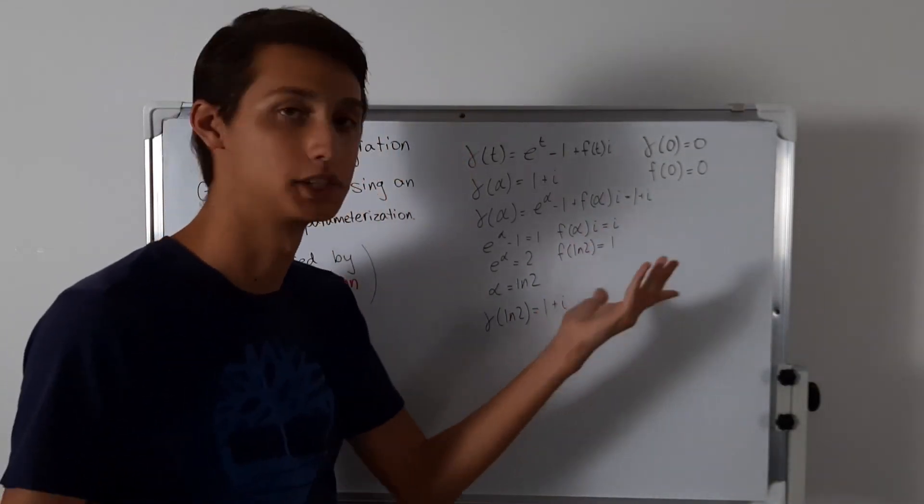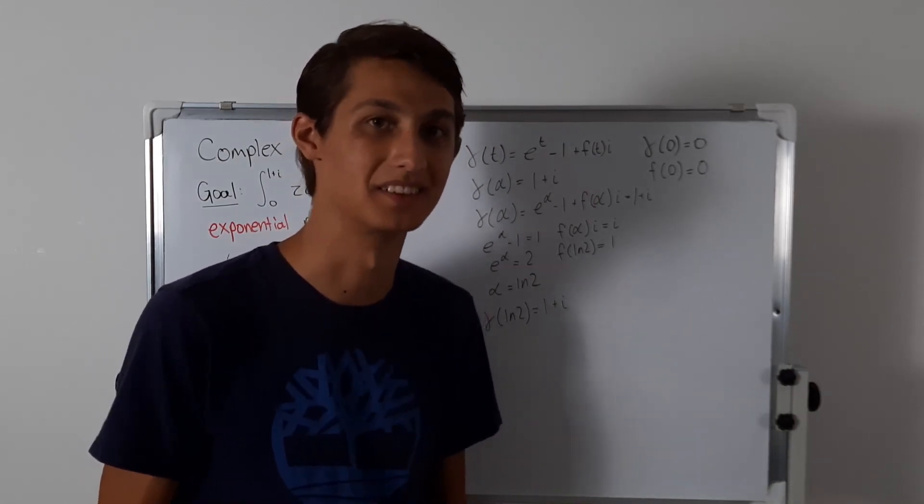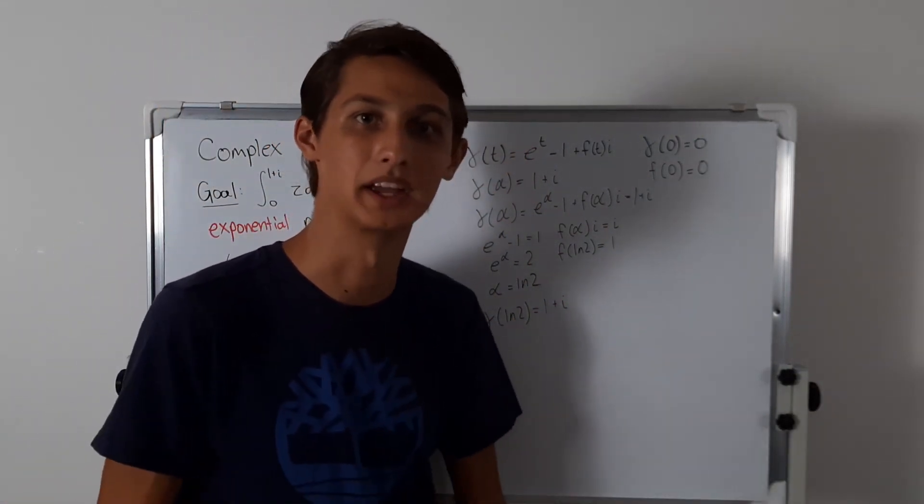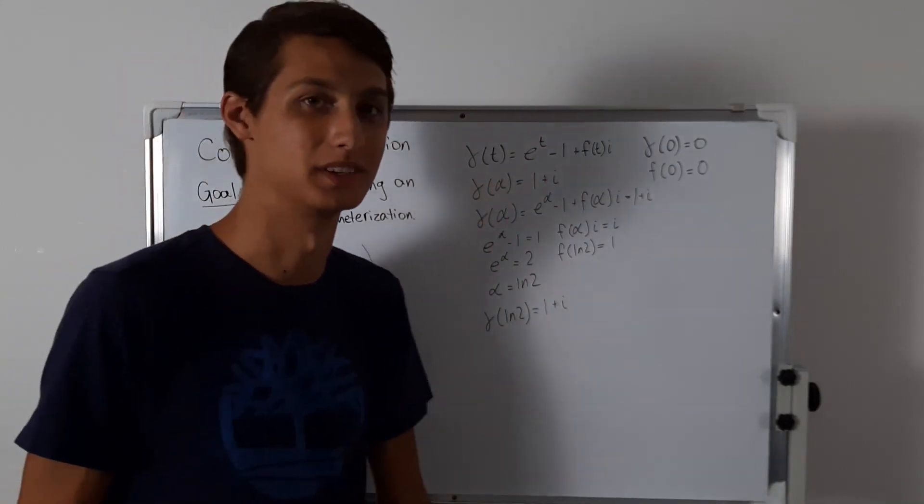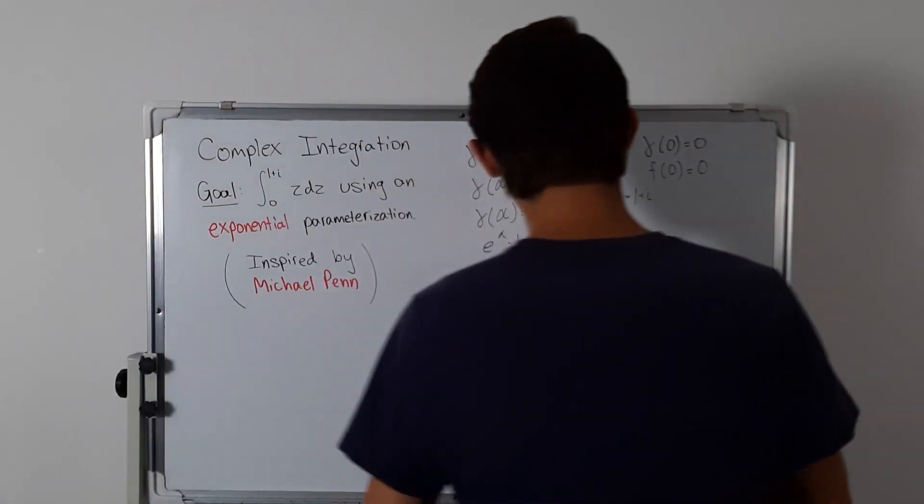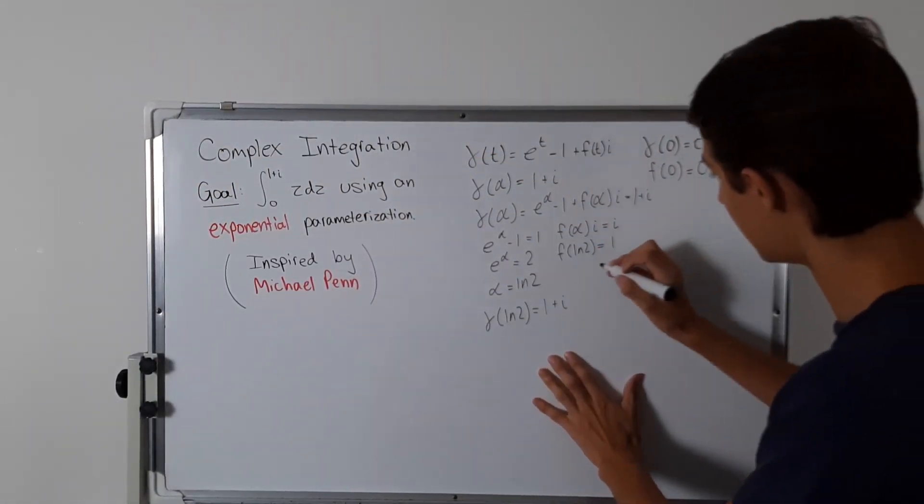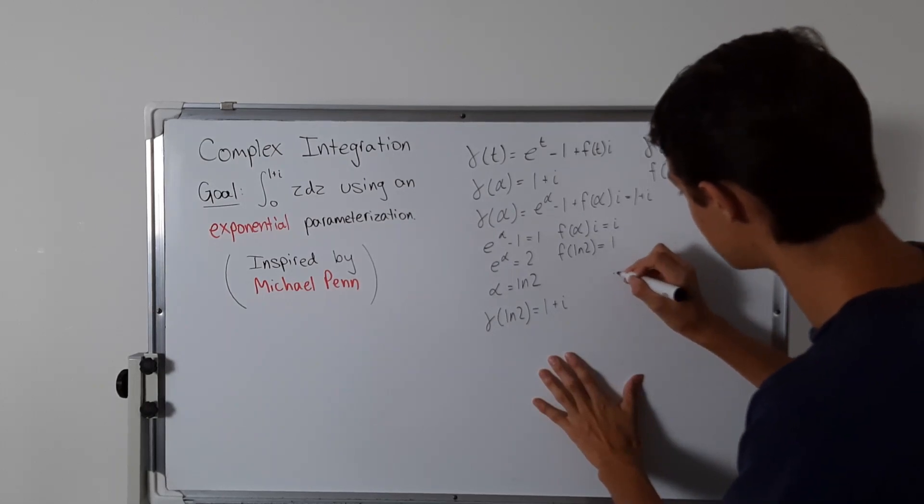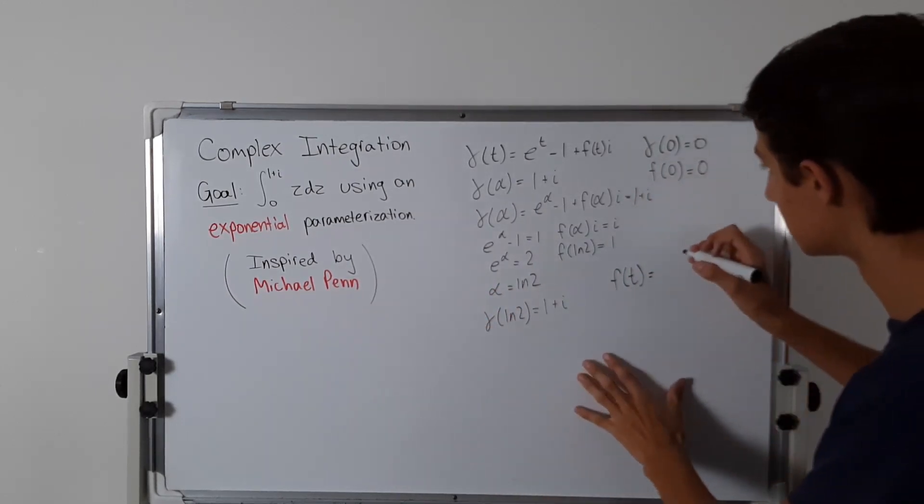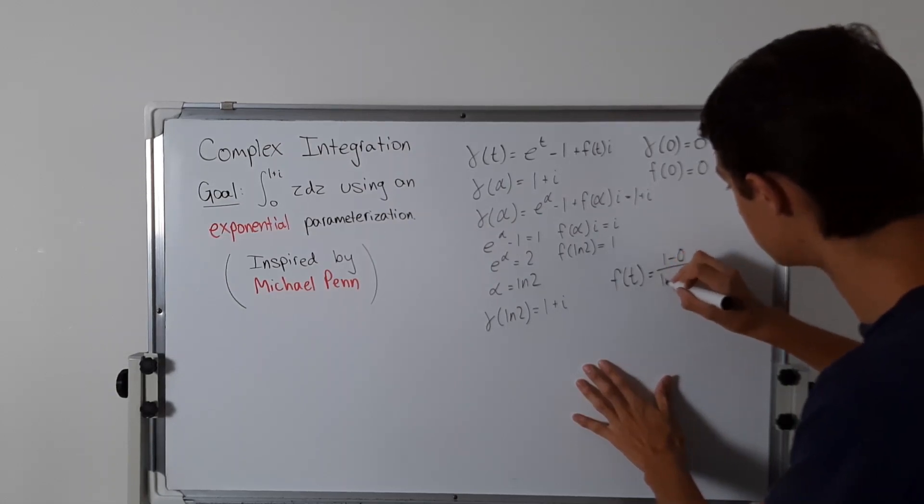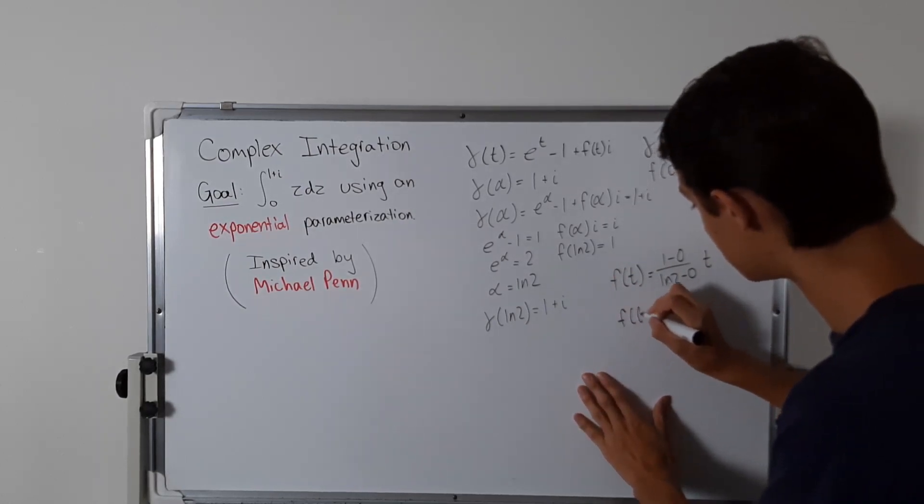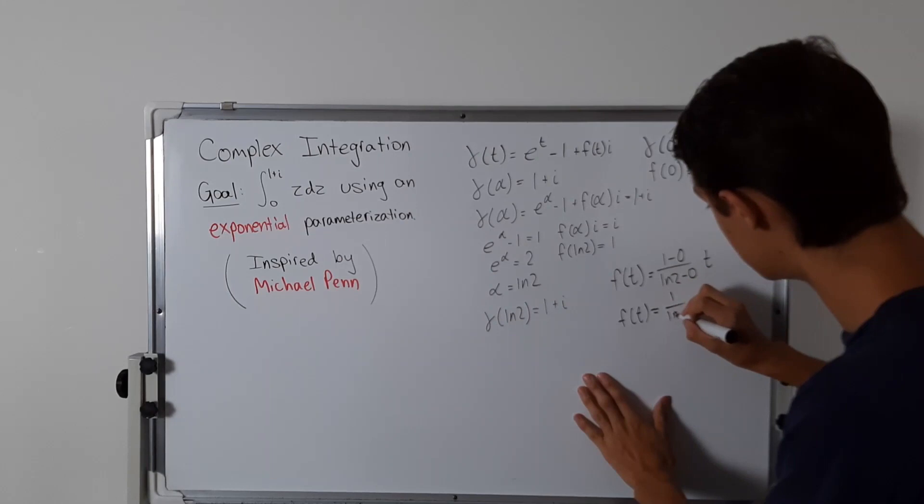Technically it can be any function that passes through these points. So why not just do a linear function? That's the easiest, because we already have the exponential here. So it wouldn't really make sense to do some overly complicated function, since this is already going to be a crazy integral to evaluate anyway. We can just figure out what the slope is. f of t passes through 0, 0, so we don't have a y-intercept. This is 1 minus 0 over ln of 2 minus 0 times t. That evaluates to f of t equals 1 over ln 2 times t.